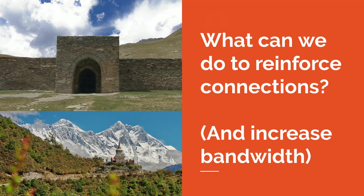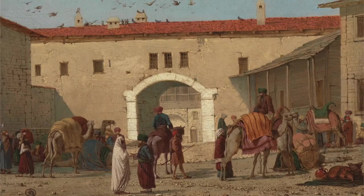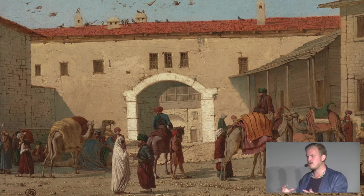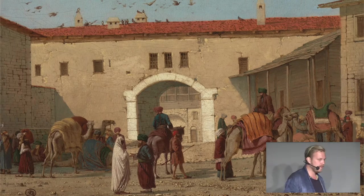On the Silk Road, important paths were reinforced by building caravanserai — big stone structures built at great effort on important paths in the network. You needed a place to plan continuation of your journey, where there was infrastructure to stock up on supplies, find new companions, and keep the culture and memes of the Silk Road intact to help you survive.